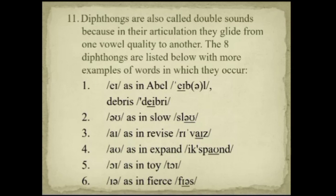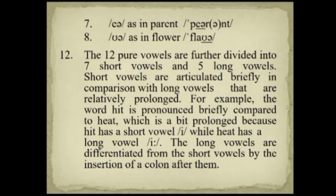Examples of diphthong words: able (not able), Cain killed Abel his brother, debris (not debris), slow, revise, expound (not expand), toy, fears, parent, flower.